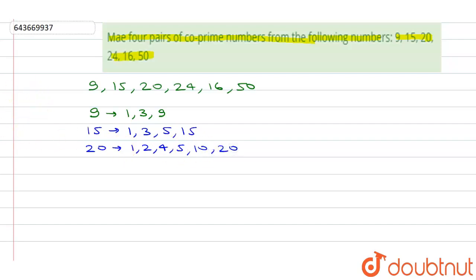Now we'll write the factors of 16. Factors of 16 are 1, 2, 4, 8 and 16. And factors of 50 are 1, 2, 5, 10, 25 and 50. So these are all the factors of all these numbers.